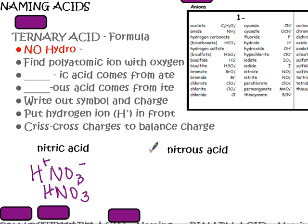Nitrous acid. Again, no hydro, so I'm looking for an oxygen. -Ous. So it comes from an -ite. So nitrite is probably what I'm looking for. And there it is: NO2 with a minus. Again, put that hydrogen in the front. Crisscross. Already canceled. HNO2.